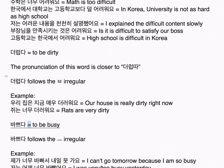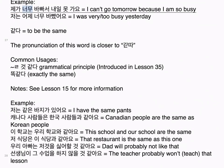바쁘다 means to be busy. 바쁘다 follows the 으 irregular. Examples: 제가 너무 바빠서 내일 못 가요. I can't go tomorrow because I am so busy. 저는 어제 너무 바빴어요. I was very busy yesterday.